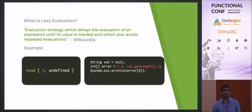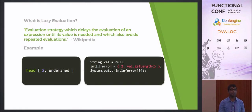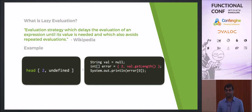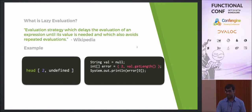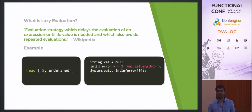There are two code samples — one in Haskell, one in Java. You have a list of two elements where the second is `undefined`, which is a value that will crash your program if evaluated. In Java, an equivalent is calling `.length()` on a null string. In Java this would crash immediately with a null pointer exception because Java evaluates every expression. But in Haskell this example will actually run because Haskell is lazy.